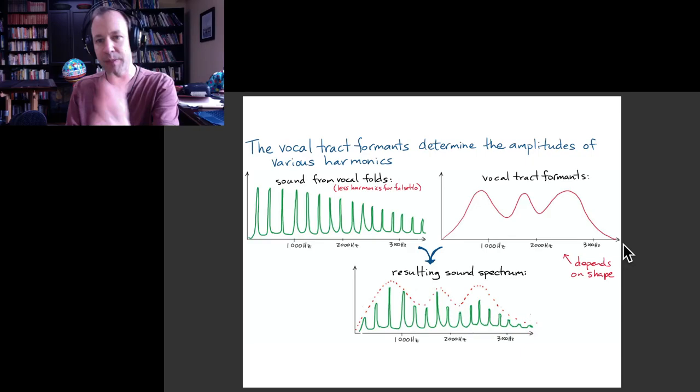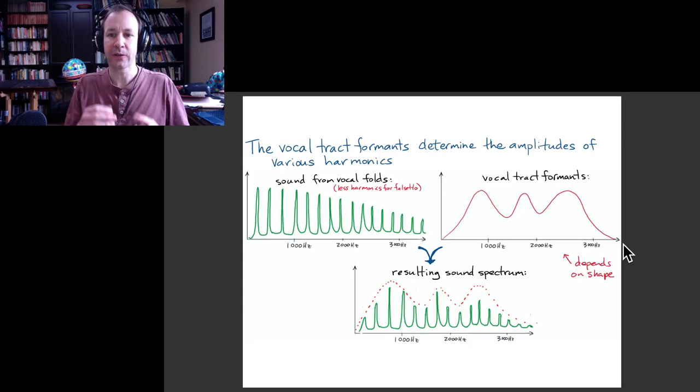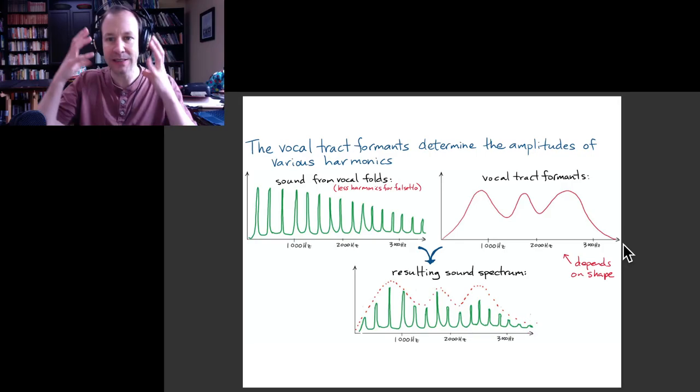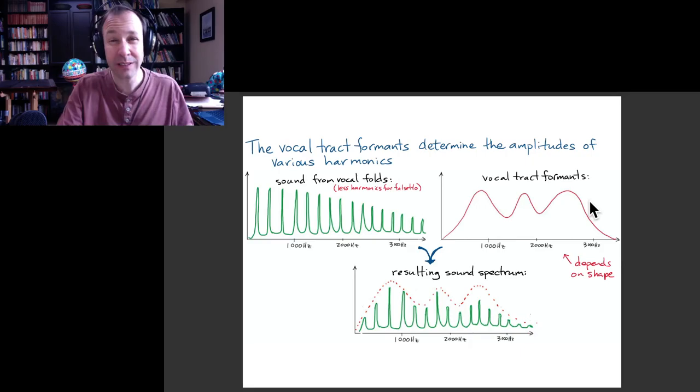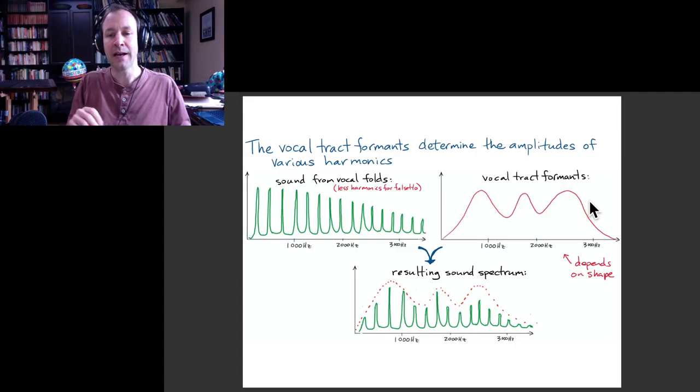And so those natural vibration frequencies of your vocal tract are what's shown in the second picture here. You see there's various peaks. And those are what are known as the vocal tract formants. So depending on the configuration of your mouth and your tongue, and so exactly the shape of your vocal tract, those can be at different locations.